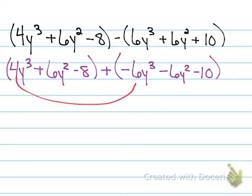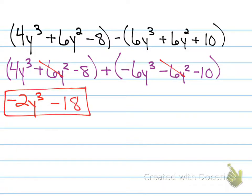Alright? And so, now, 4 minus 6 gives me negative 2. 6y squared minus 6y squared is 0. Do I even need to write that? No. They just cancel. Minus 18. Because negative 8 minus 10 is negative 18.